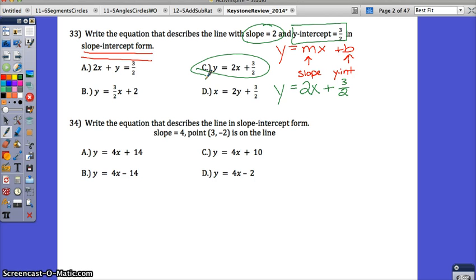Slope-intercept formula, definitely see on the Keystone, so memorize that formula. We use it a lot with functions and equations, so we should know Y equals MX plus B.